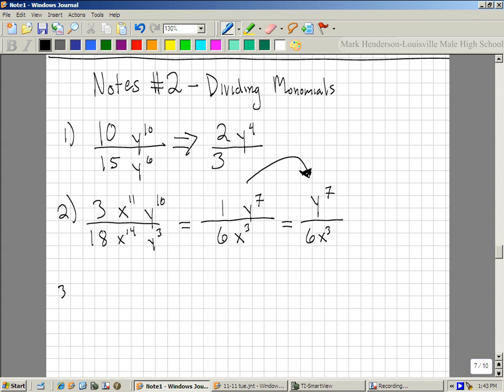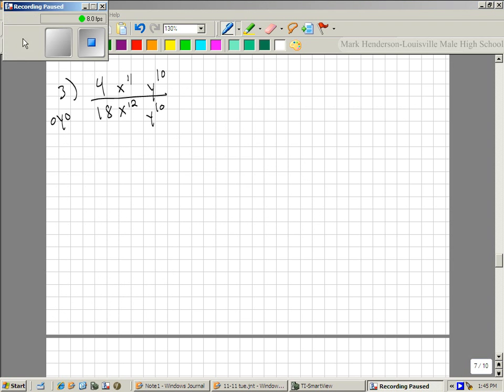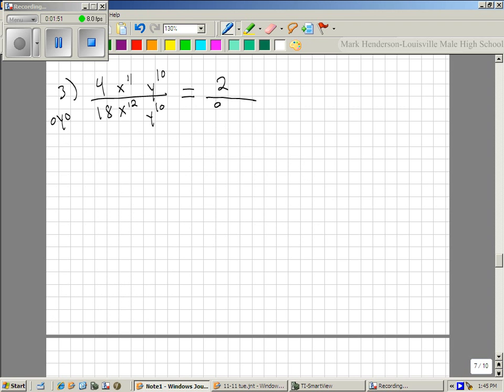Okay, third one I want you to do on your own, please. 4 over 18, x to the 11, x to the 12, y to the 10, 10 on top, y to the 10 on the bottom. Okay, so here's what happens. We get 2 over 9. Everybody agree with that?